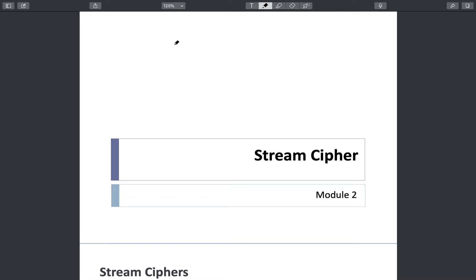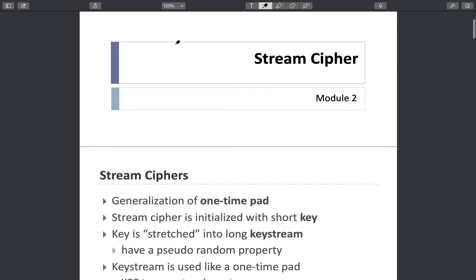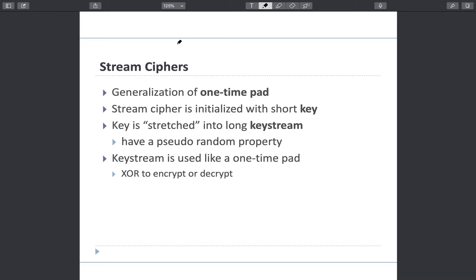Hello everyone. In this video we are going to learn about stream ciphers, and in particular we are going to study about the stream cipher RC4. We have already learnt what one time pad is in the first module. In one time pad, however long the message was, the key was the same length. So it was encrypting in a stream format, each bit of the plain text encrypted using a bit of the key. Stream ciphers are in general one time pad.